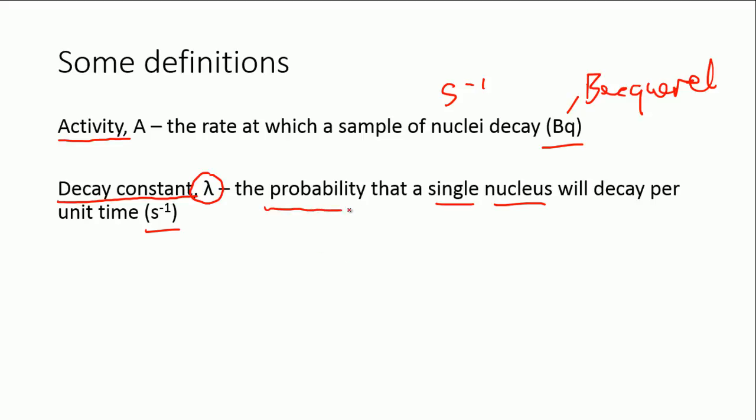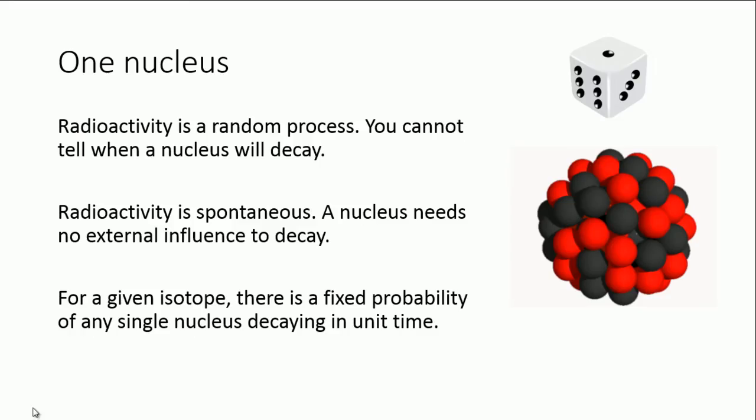It's important just to emphasize that it is a probability, because obviously randomness is part and parcel of radioactivity. And what random actually means is that you cannot tell when a single nucleus will decay, or which nucleus will decay in that particular time.